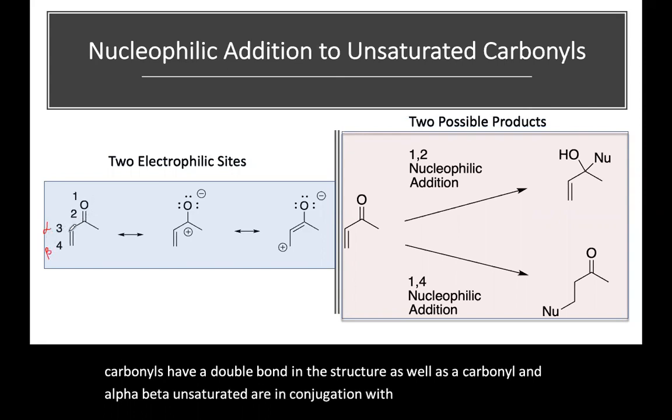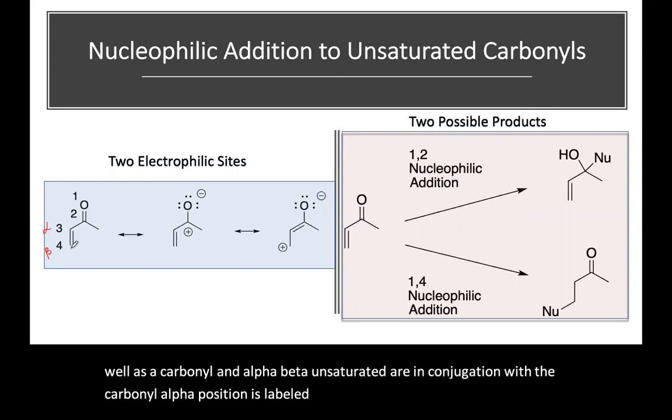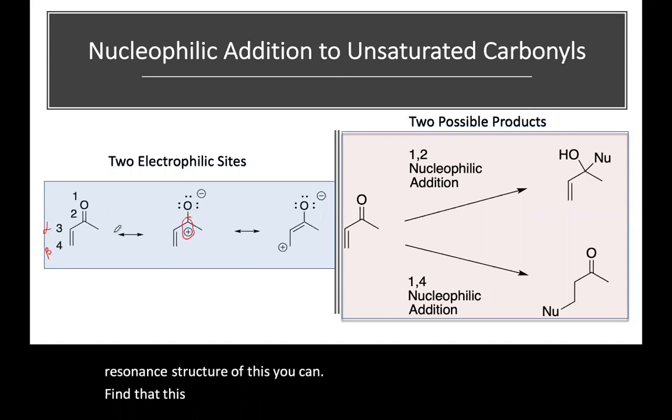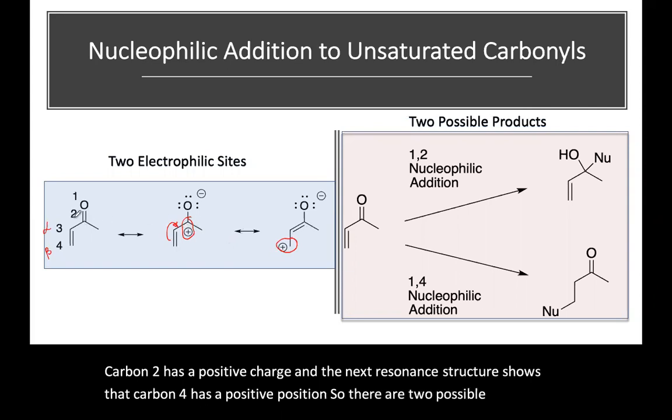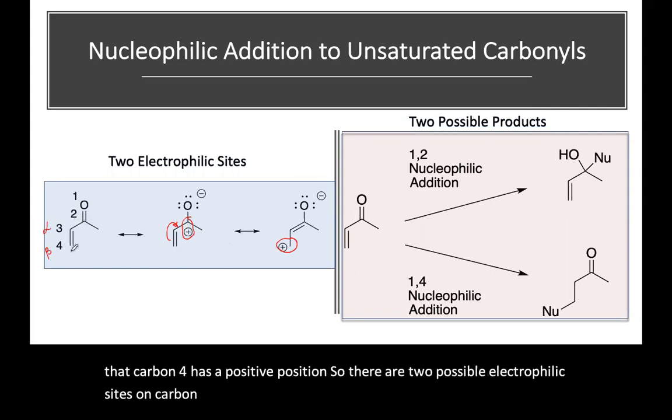The alpha position is labeled here as three and beta as four. When you draw a resonance structure of this, you can find that carbon number two has a positive charge, and the next resonance structure shows that carbon number four has a positive position. So there are two possible electrophilic sites on carbon two and on carbon four.